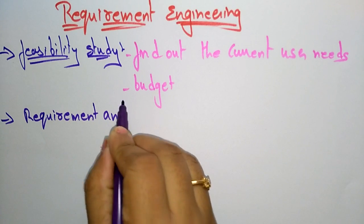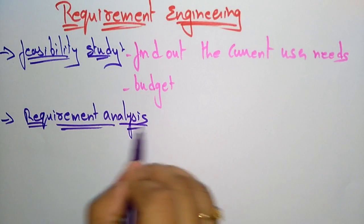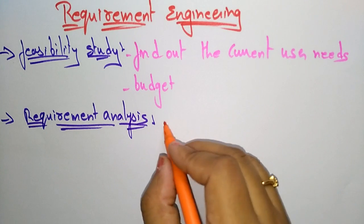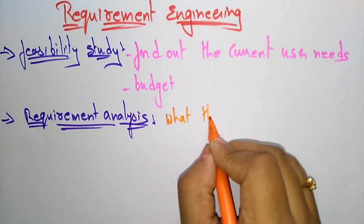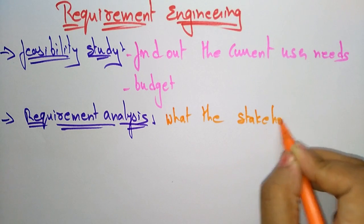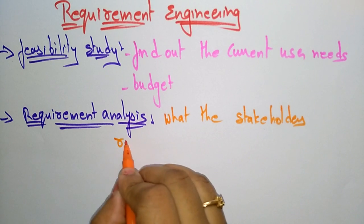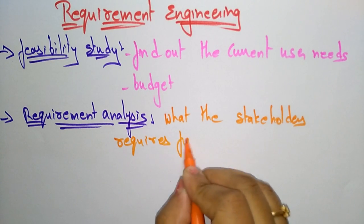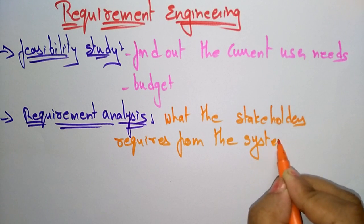Next is requirement analysis. In the requirement analysis, they have to think about what the stakeholders require from the system — what exactly they want and require from the system.